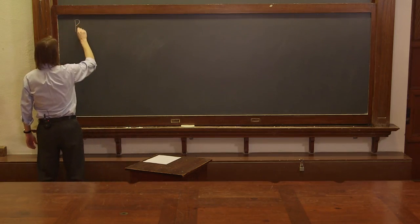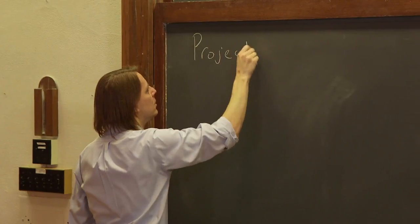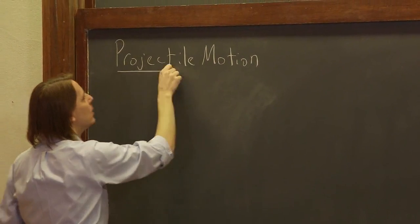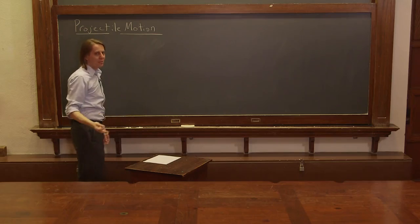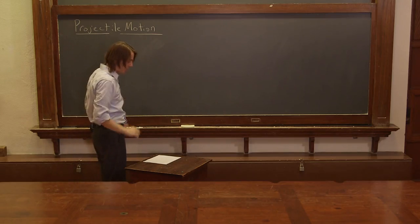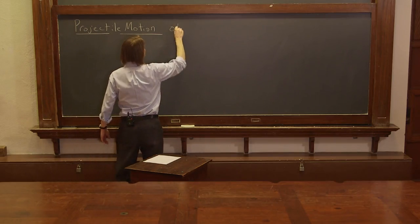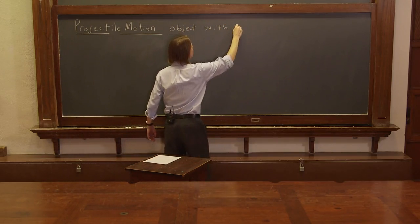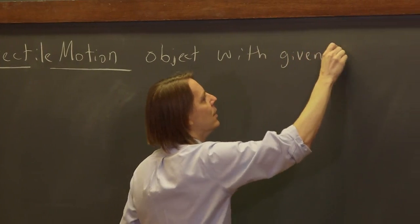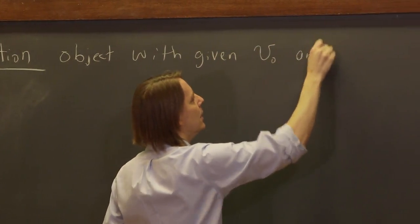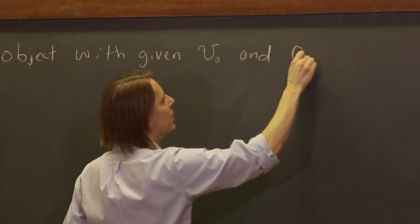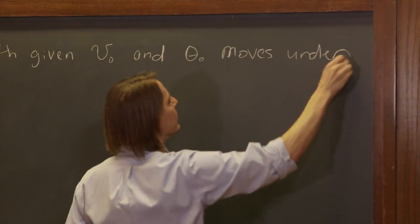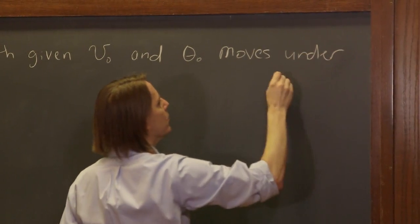Now let's describe projectile motion. We've been describing it, but now let's look at the standard projectile motion problem: an object with a given speed v-naught and direction theta-naught moves under the influence of gravity.